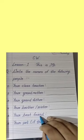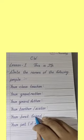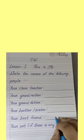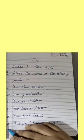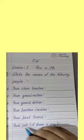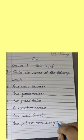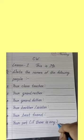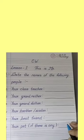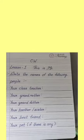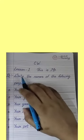Number five: your best friend's name — you have to write your best friend's name today as well. Number six: your pet — if you have any pet like a parrot, dog, cat, or rabbit, you have to write your pet's name here.